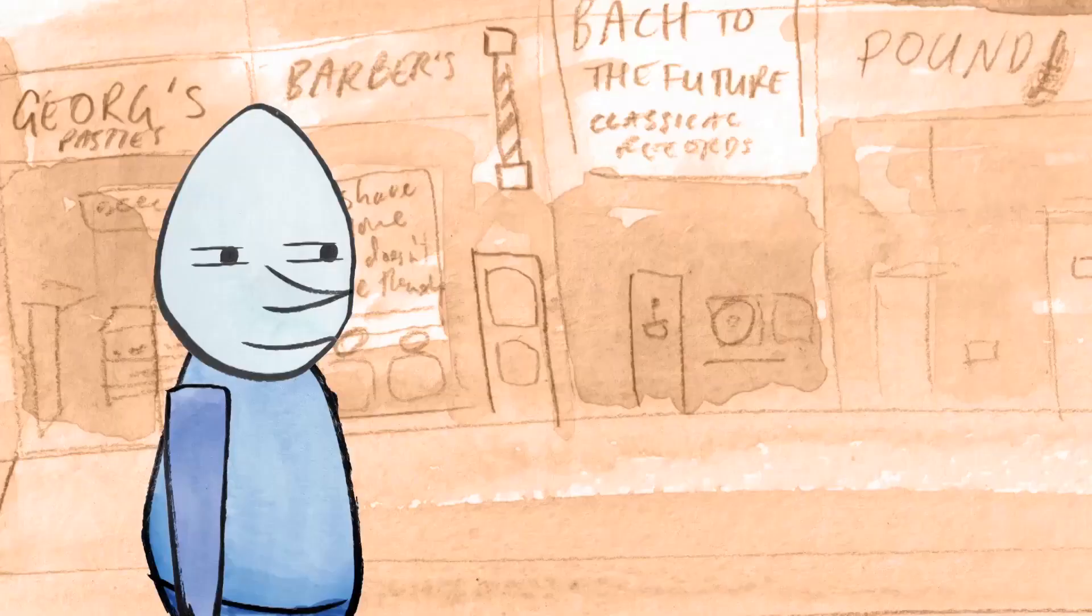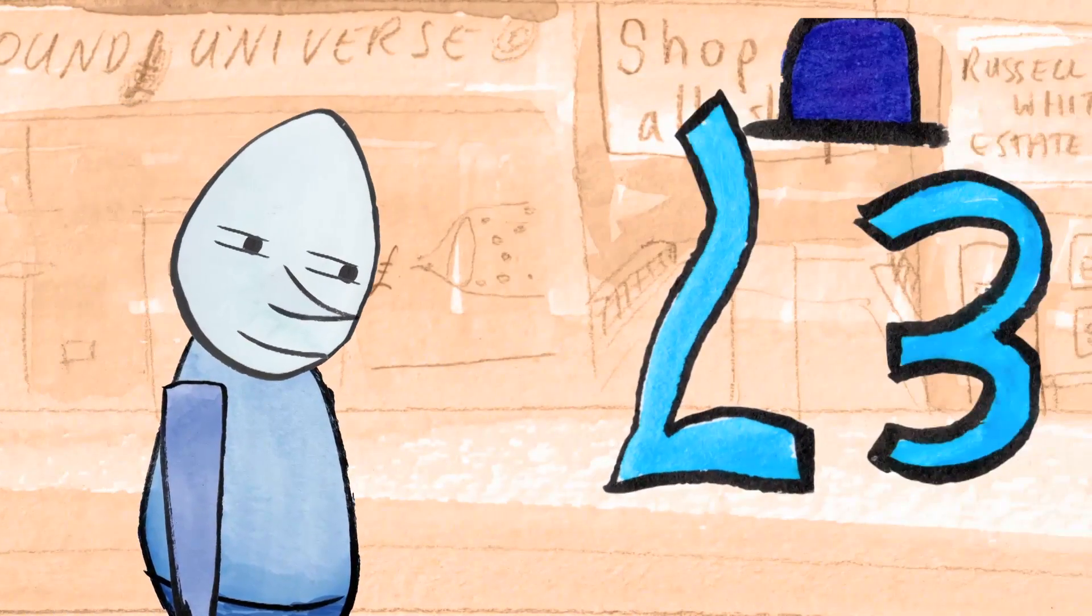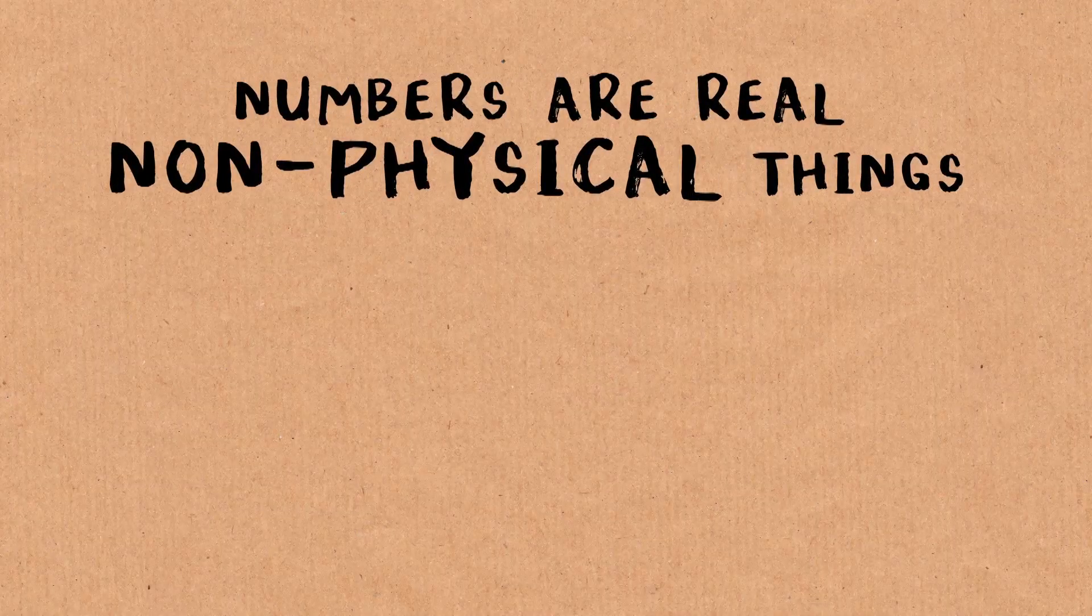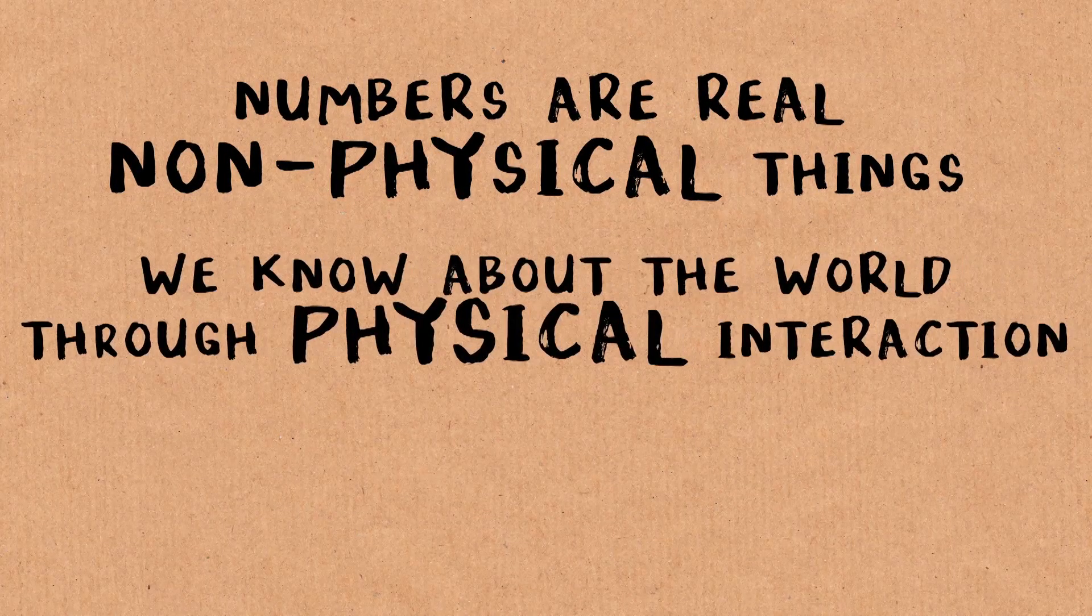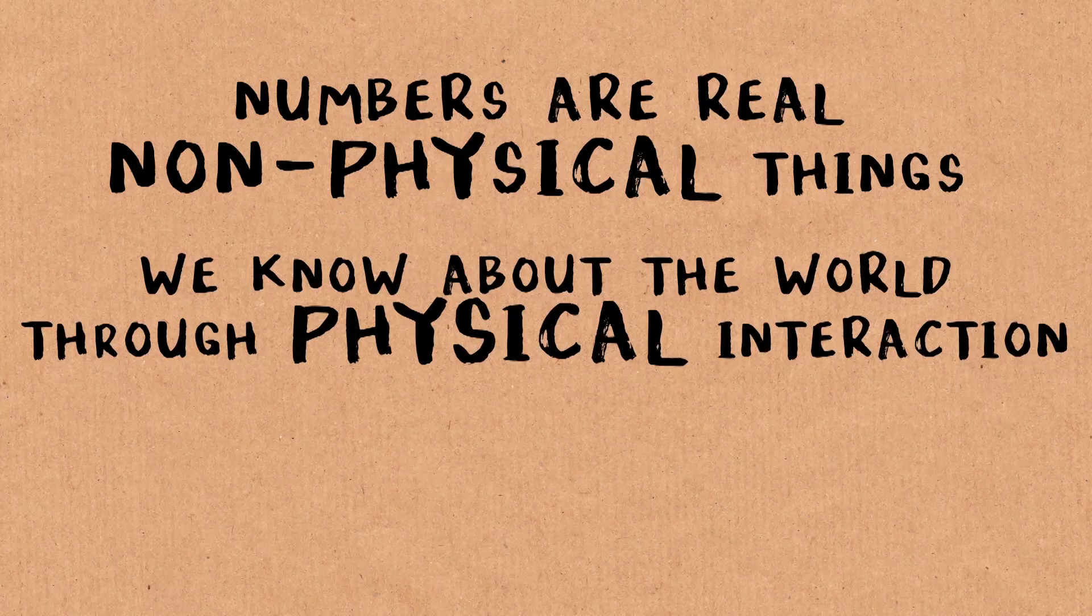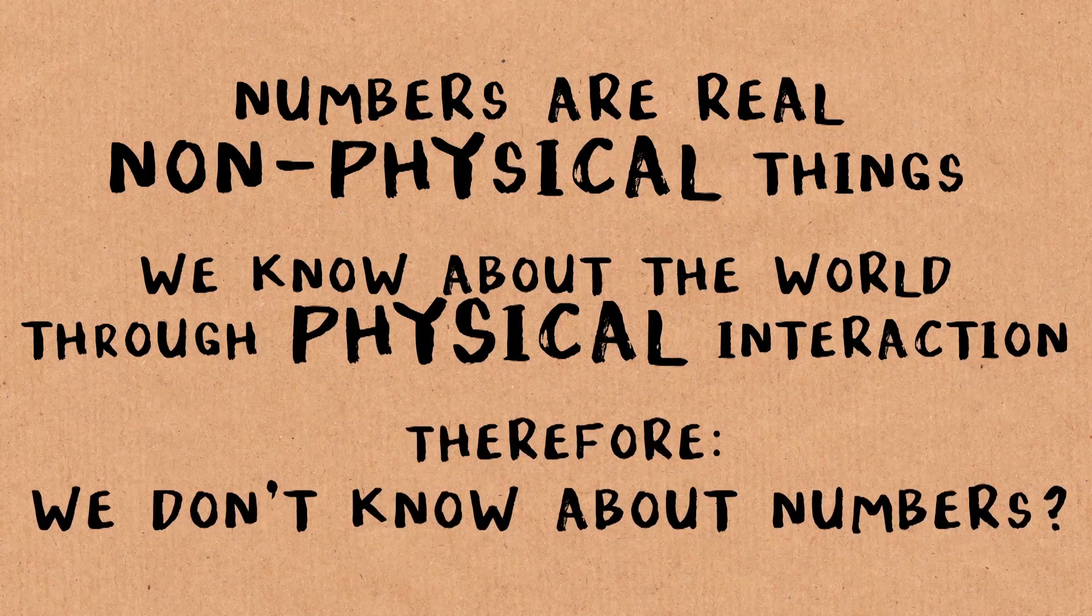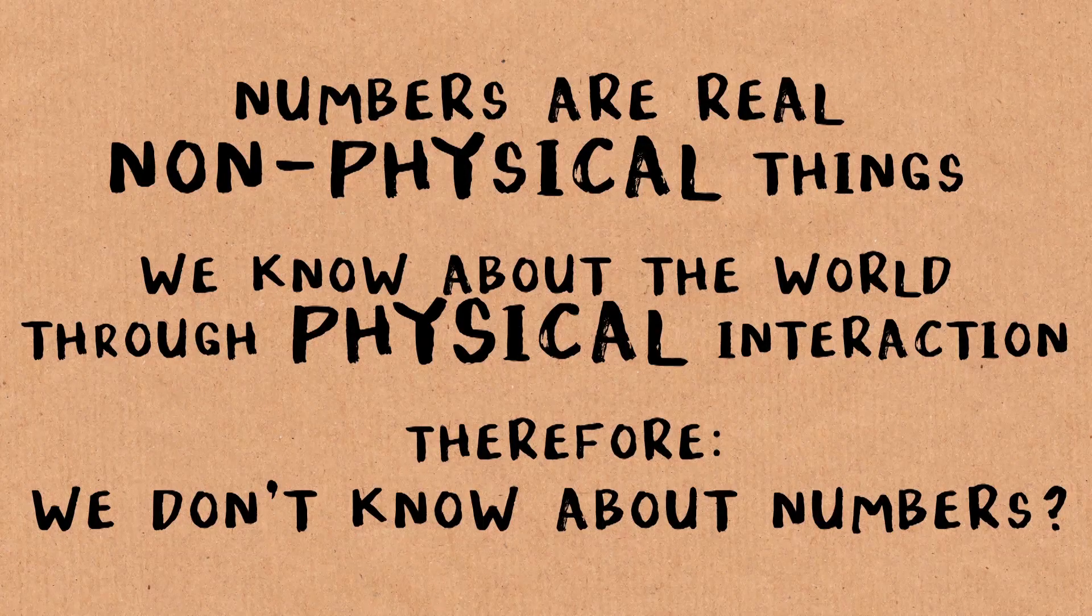I think we're in a bit of a bind when we come to thinking about our knowledge of numbers. Because I think numbers are real things. I think they're objective things. So that when I talk about the number 23, and when you talk about the number 23, we're talking about the same thing. I don't think the number 23 is something that we could bump into in the street, think that exists, but it doesn't have a physical presence in the world. Numbers don't bash into each other like cars or snooker balls do. So the bind is something like numbers are real non-physical things. On the other hand, we know about the world by physically interacting with it. That looks a bit like saying we don't know about numbers. But I think we do.